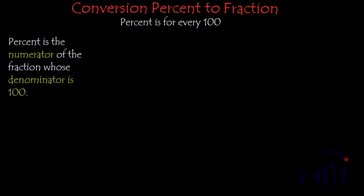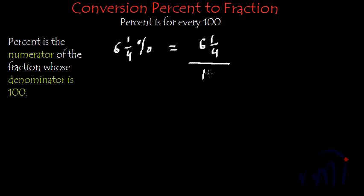So suppose if we want to convert 6 and 1/4 percent into a fraction, what do we have to do? This is nothing but the numerator of a fraction whose denominator is 100. Now if I convert this mixed fraction into an improper fraction, it will be 6 × 4 = 24, plus 1 = 25 by 4. The whole thing is divided by 100.